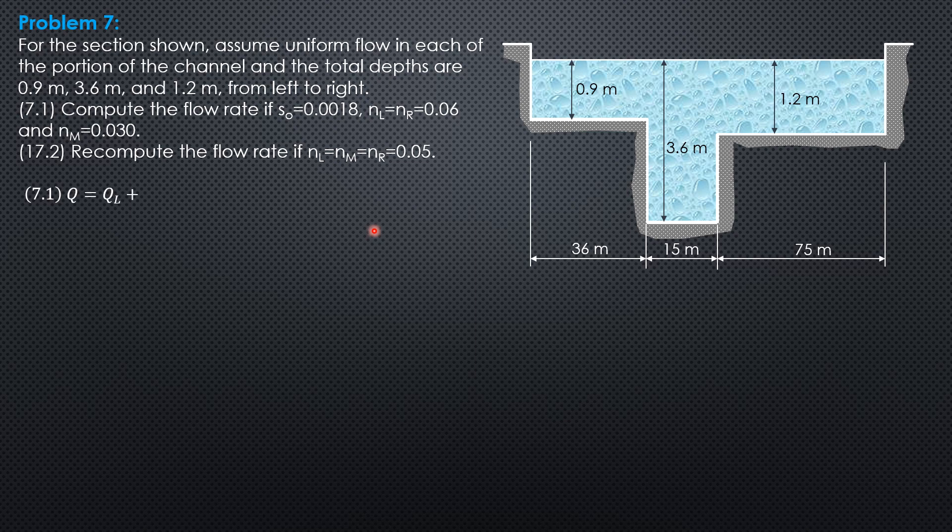Q is Q left plus Q middle plus Q right channel. Our formula for Q in terms of area and perimeter is area to the 5/3, slope to the 1/2 over N perimeter to the 2/3. From area over N, hydraulic radius to the 2/3 S to the 1/2, so we don't need to compute hydraulic radius anymore.